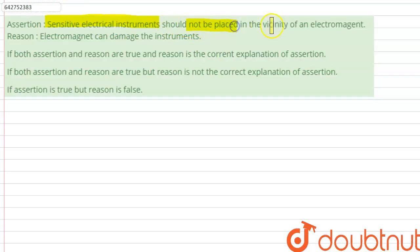not be placed in the vicinity of electromagnets. Electromagnets can damage the instruments. So the question has given us two statements and is asking if both of them are independently true and if the reason is the correct explanation of the assertion.